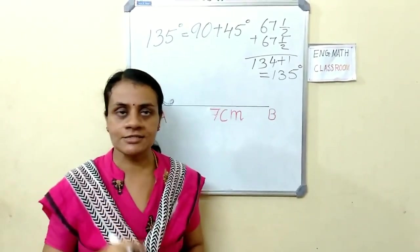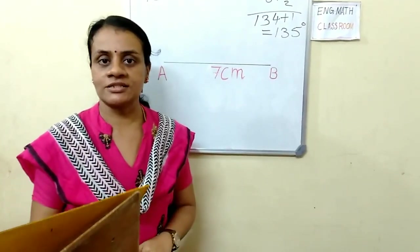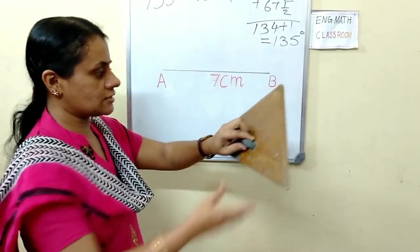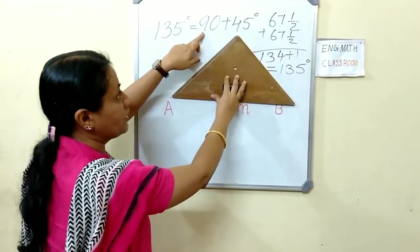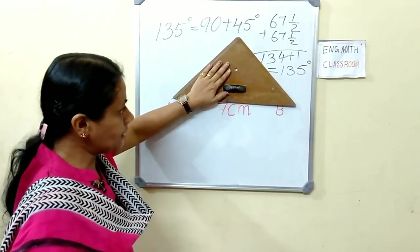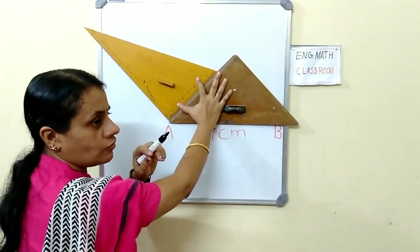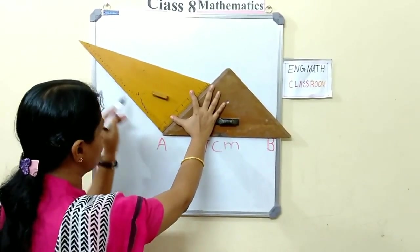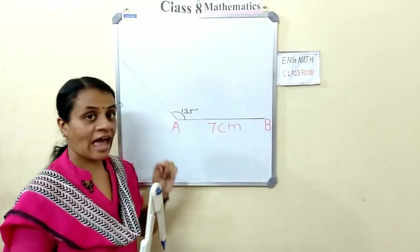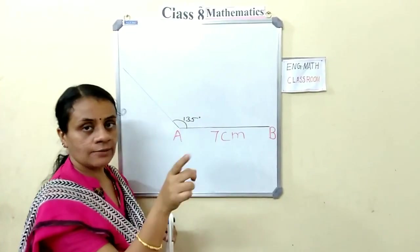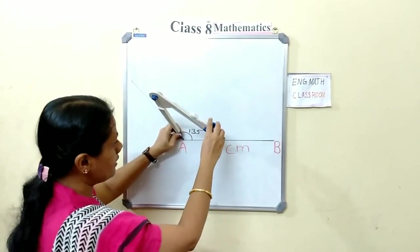To measure 135 degrees, use two types of set squares: place the 45-degree set square here, then fix it tightly and take another set square where the 90-degree angle is. Keep it here. Take a pen, draw the line, and join point A. Now we have drawn 135 degrees at point A.